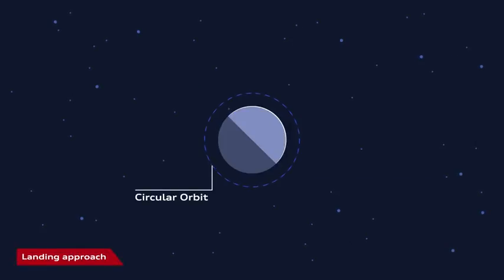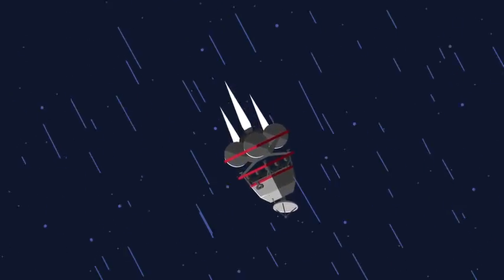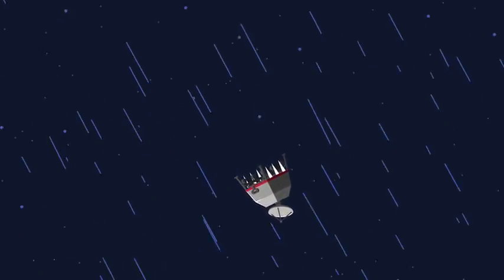The spacecraft Alina, carrying the two Audi Luna Quattro, approaches the moon at high speed and enters its orbit at a precisely calculated angle. Once this task is completed, the spacecraft prepares for the last part of the journey, the landing.